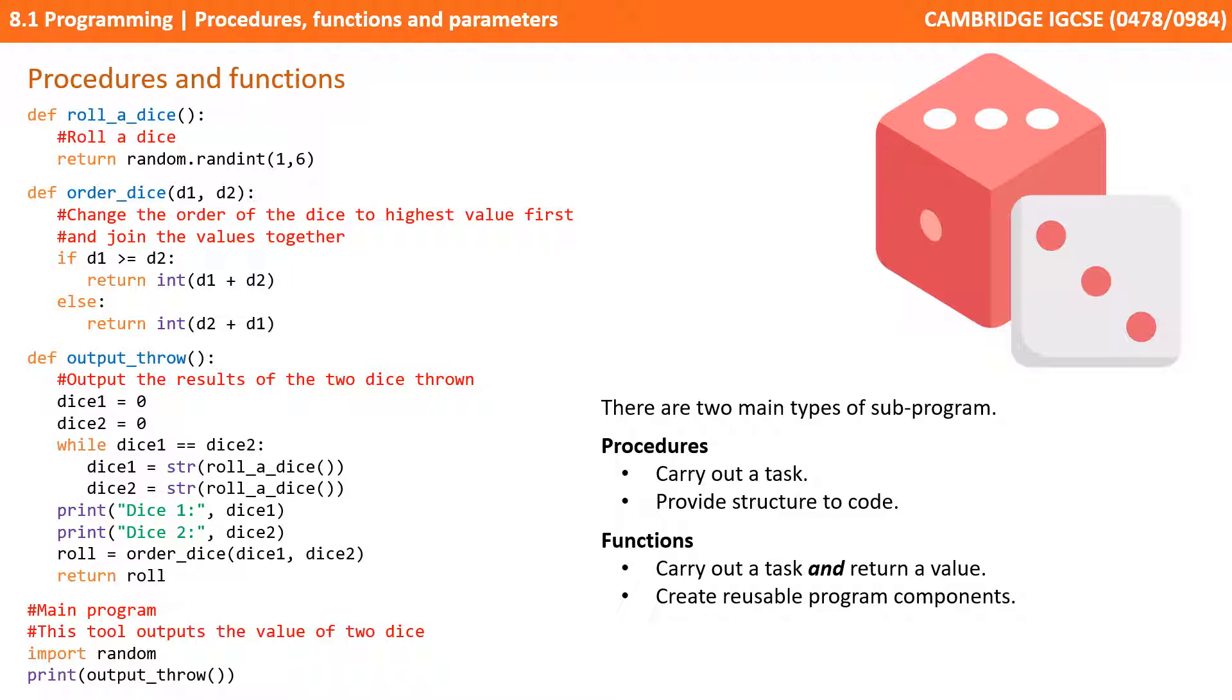Both procedures and functions can be thought of as subroutines or subprograms. Procedures carry out a task and they help provide structure to your code. Functions carry out a task and in addition return a value, and that bit's important, and they help you to create reusable program components.